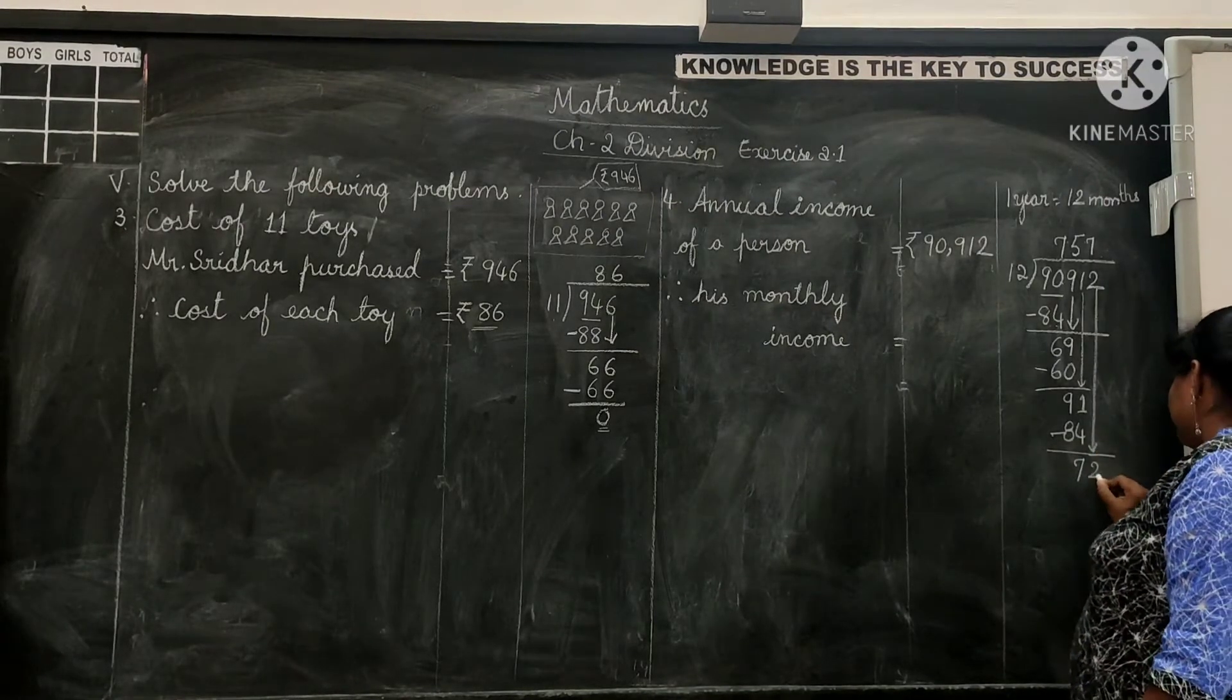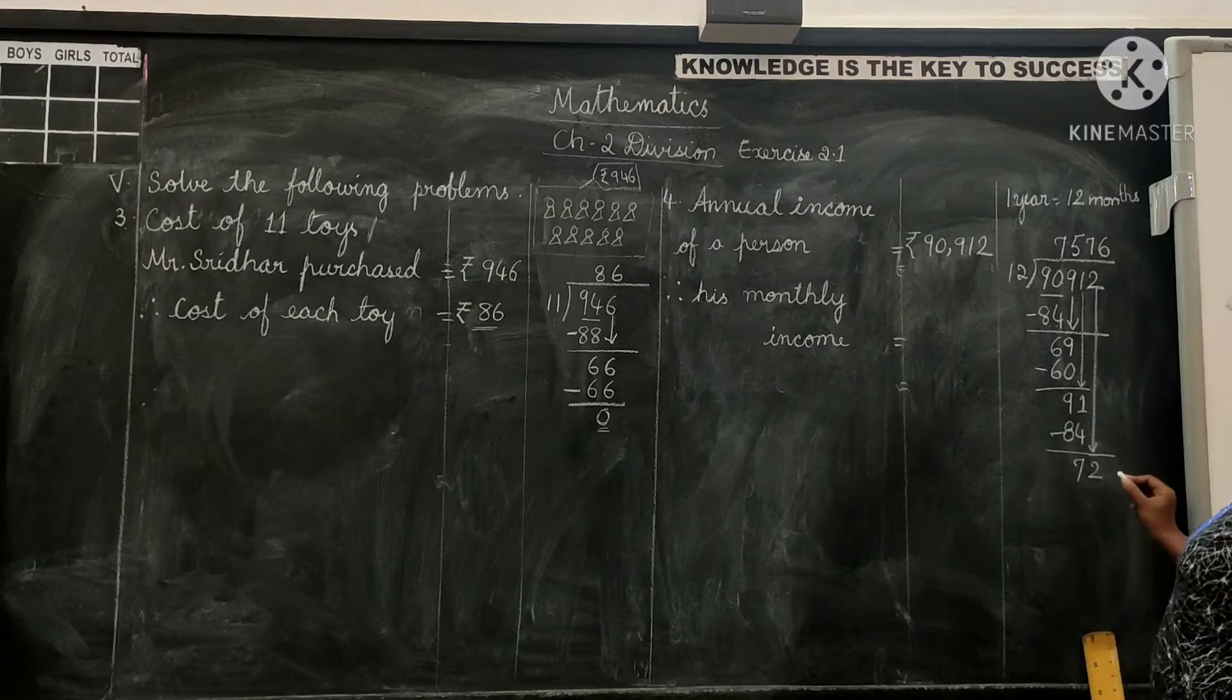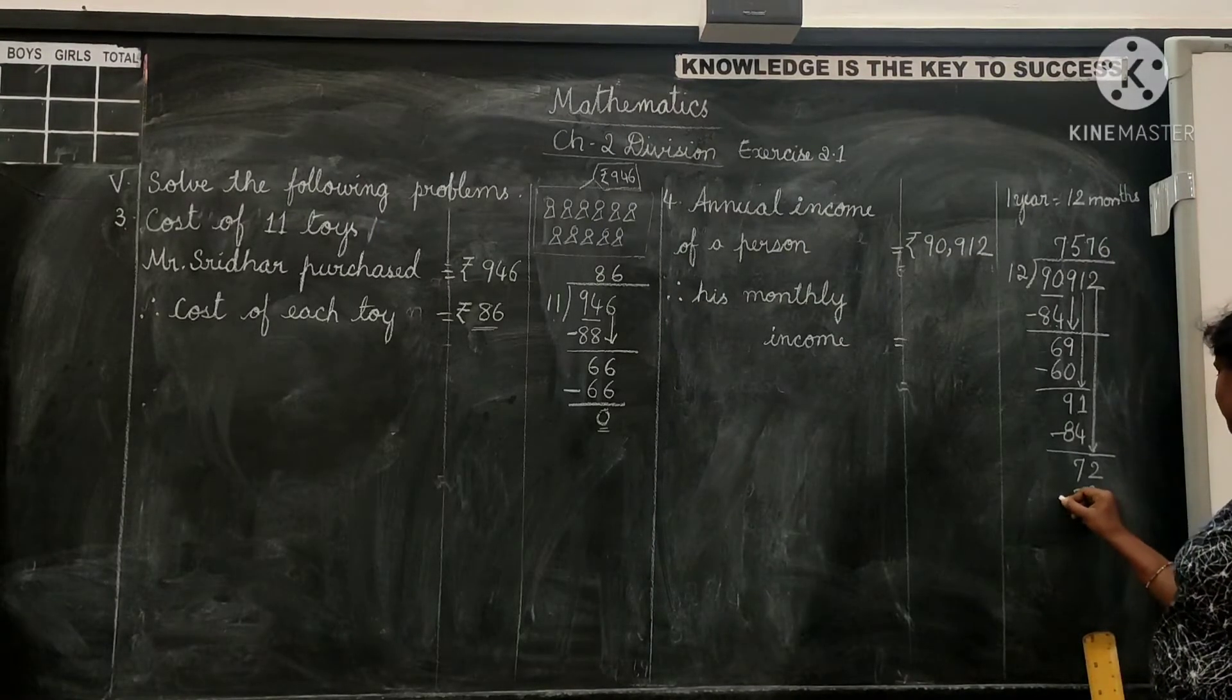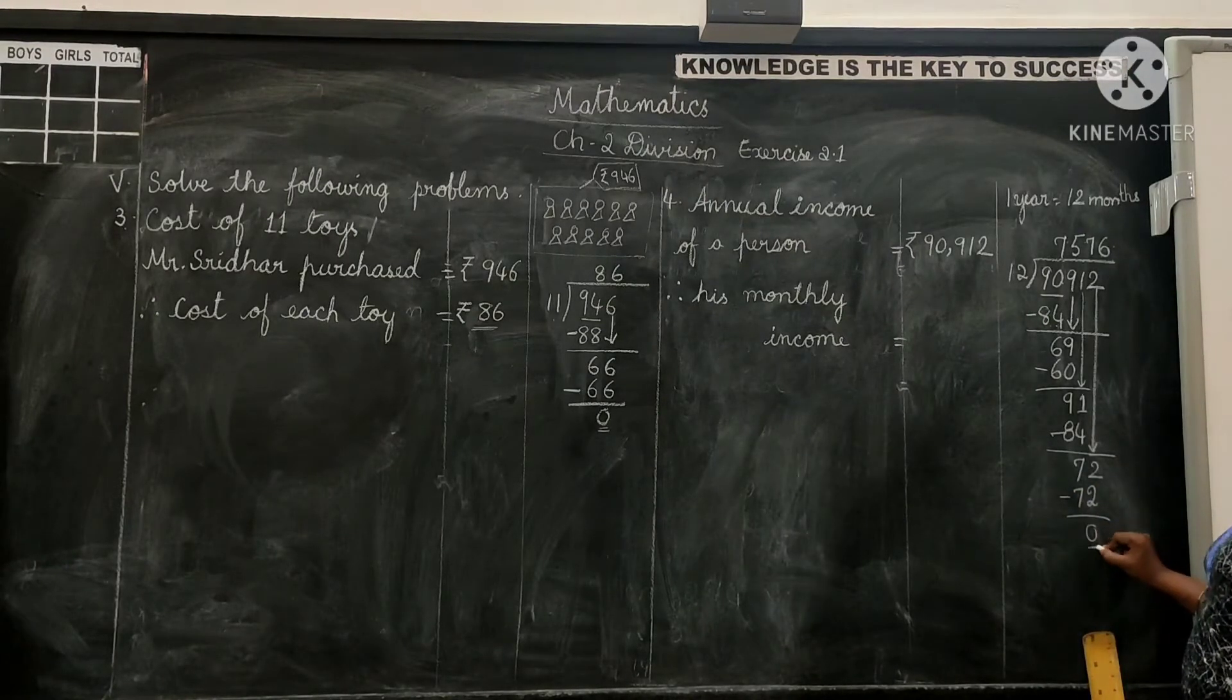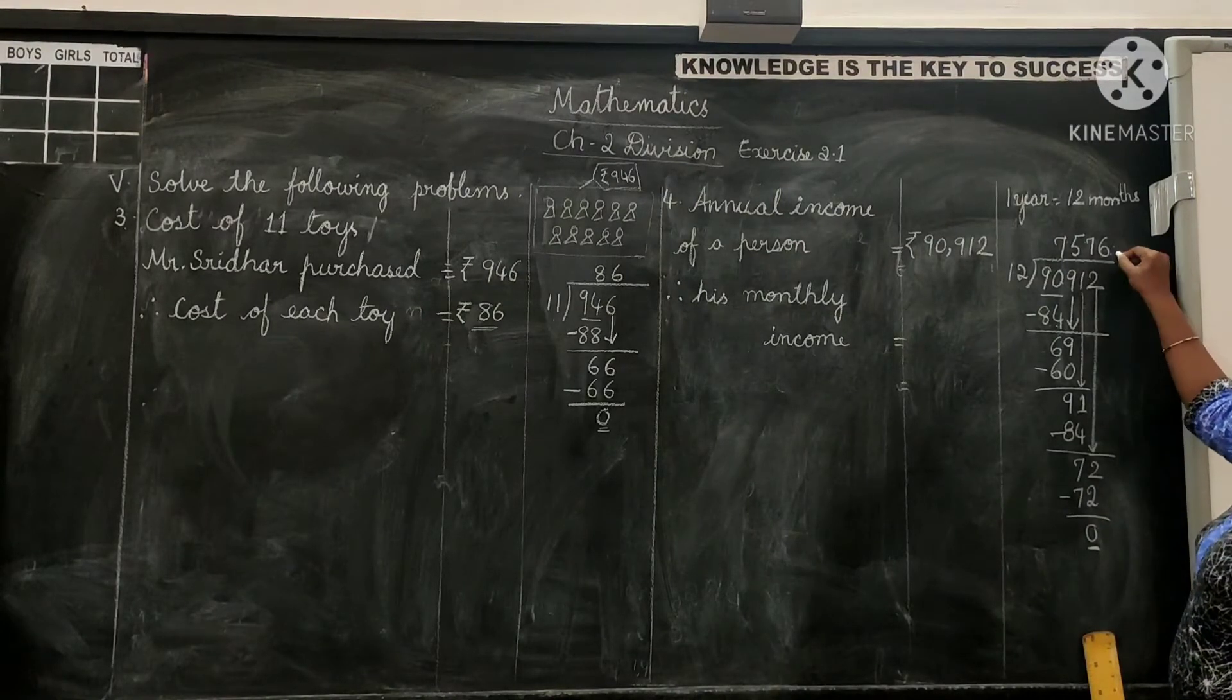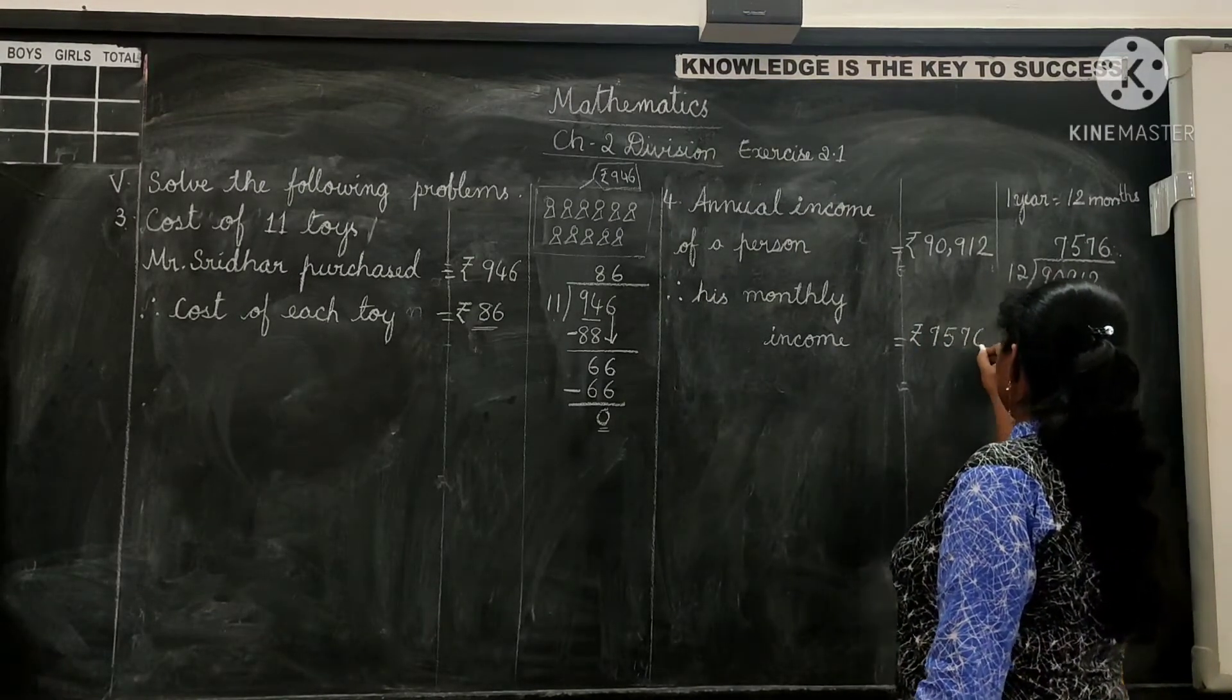Get 2 now. 12 six times gives you 72. 6 in quotient's place, 72 under dividend. 72 minus 72 will give us 0. 0 is the remainder, which means his monthly income is rupees 7,576.